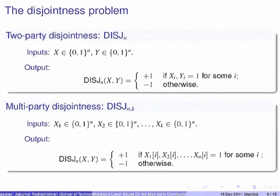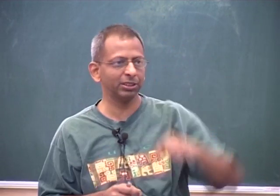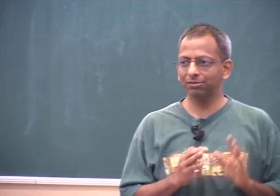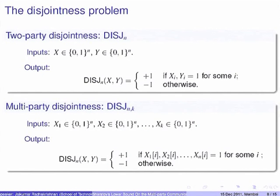The disjointness function is central to communication complexity. Communication complexity lower bounds are used in streaming, circuit complexity, and proof complexity, and the disjointness function plays an important role, especially its randomized communication complexity. It has been studied for a long time. In the two-party case, there is a trivial linear upper bound (one party sends everything), and even with randomness you cannot do much better — there is a linear lower bound, a deep result proved originally via Kolmogorov complexity and later via discrepancy and information complexity methods.